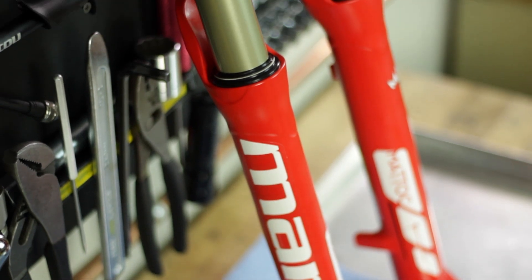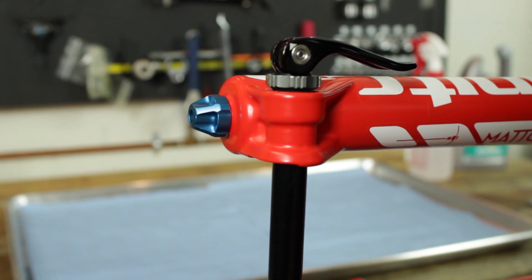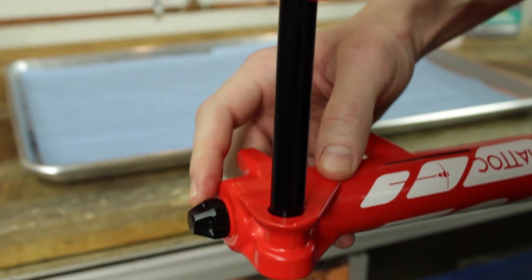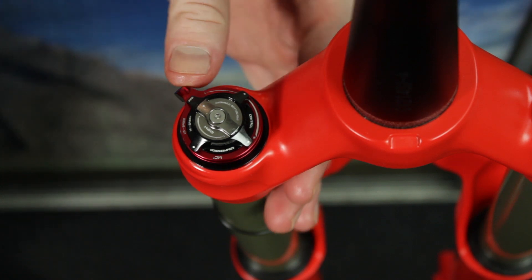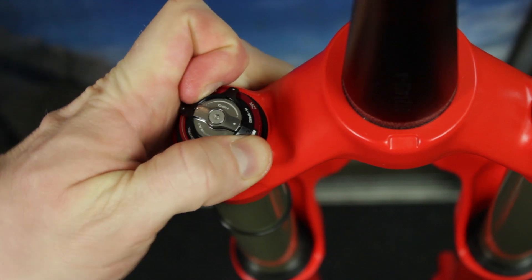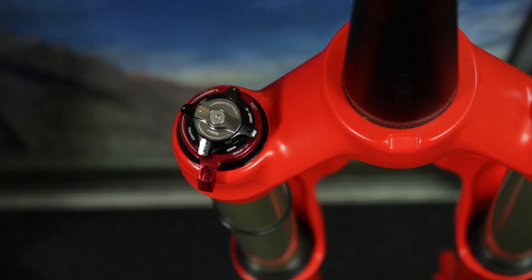To start off, here are the key external components you will need to know to perform maintenance on your Matic. At the bottom of the Matic in blue is the rebound adjustment knob and in black is the air valve cap. This is the low speed adjustment knob in red. Right above that in black is the high speed adjustment knob. Finally in silver is the hydraulic bottom out adjustment knob.